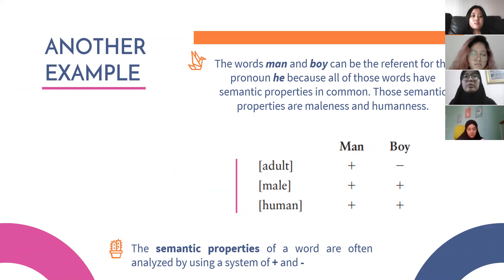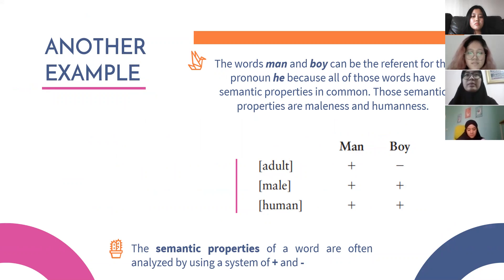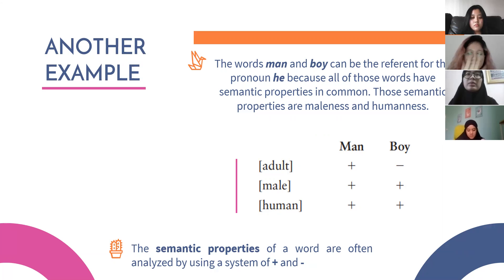Consider the other semantic properties of each word. The semantic properties of a word are often analyzed using a system of plus and minus. In the properties of male and human, both words get plus, but in the adult category, the word boy gets minus, because a boy is a child. By analyzing the semantic properties, it becomes clear that the difference between the meanings of the two words is the individual's age or stage of life.